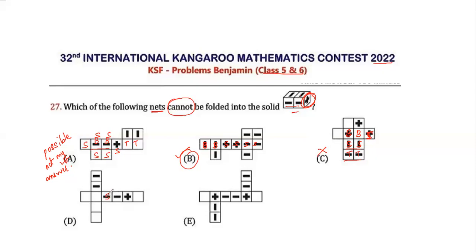Similarly, if you do it here, like this becomes my bottom, this is onto my side, okay, then these will be on the side, this will be on the top, this will be on the top, these will be on the side and these will be on the side. So this is possible, hence not my answer. Similarly E will not be my answer.